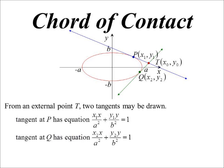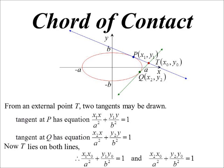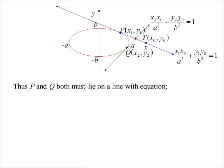The chord of contact is the chord that joins those two points of contact — that is, what is the equation of PQ? The way to do it: T lies on both of those tangent lines. Because T lies on both lines, when I substitute T into the equation for P I must get a correct statement, and likewise for Q. So it must be true that x₁x₀/a² + y₁y₀/b² = 1, and also x₂x₀/a² + y₂y₀/b² = 1. We're looking for an equation of a line that both x₁,y₁ and x₂,y₂ lie on, and the equation of that line must simply be: